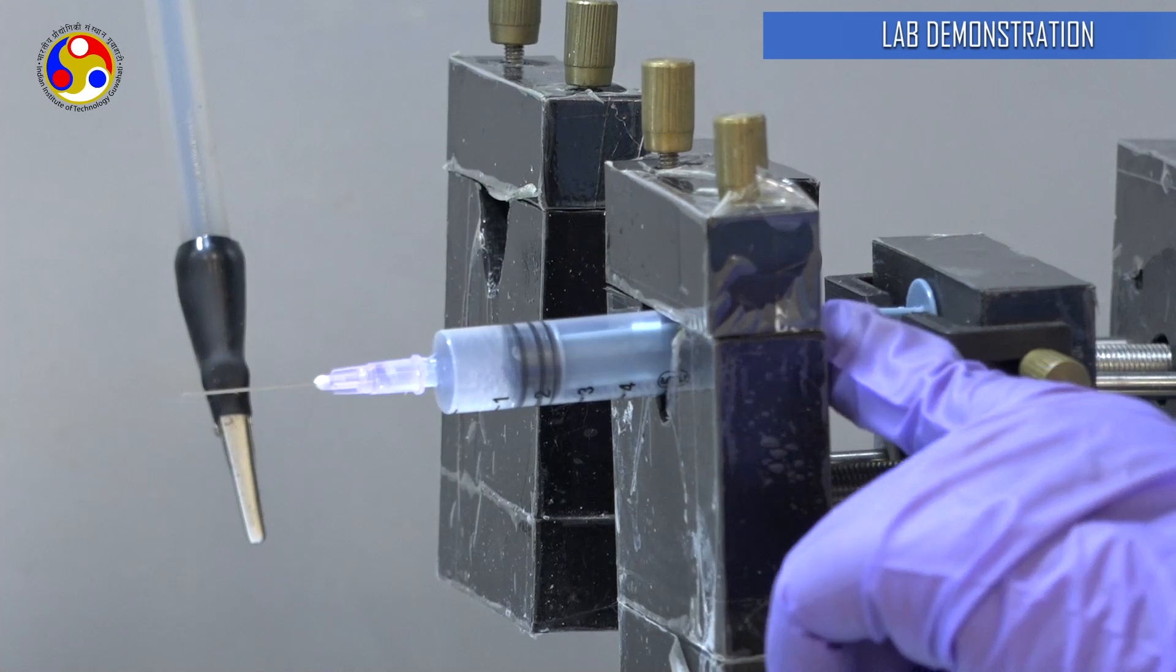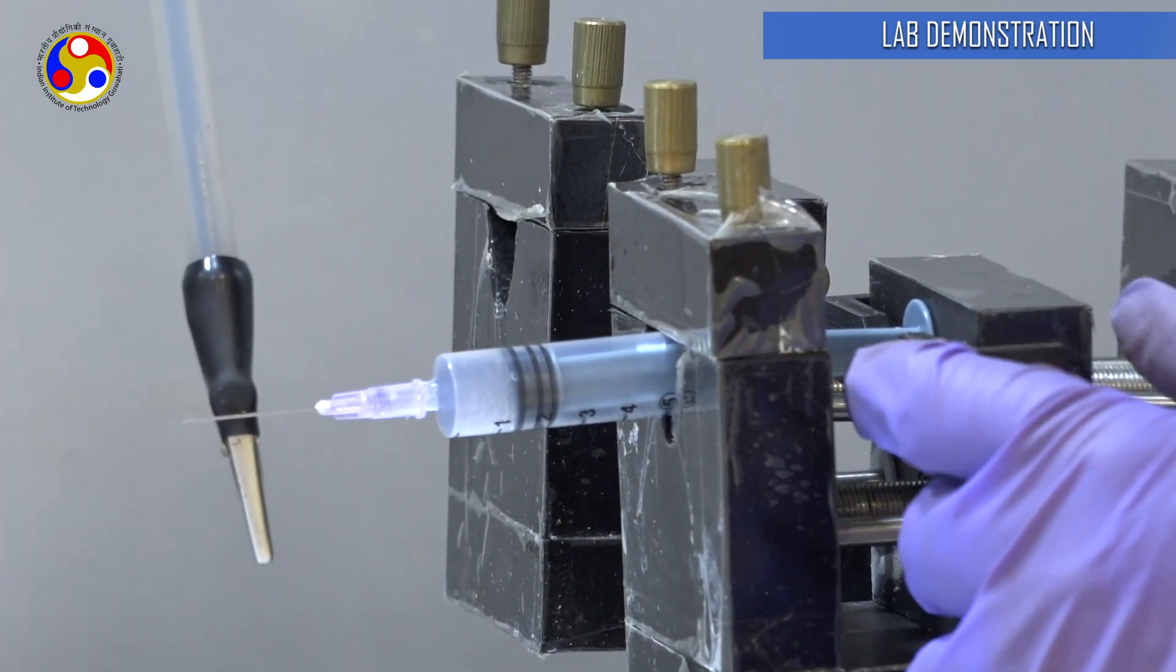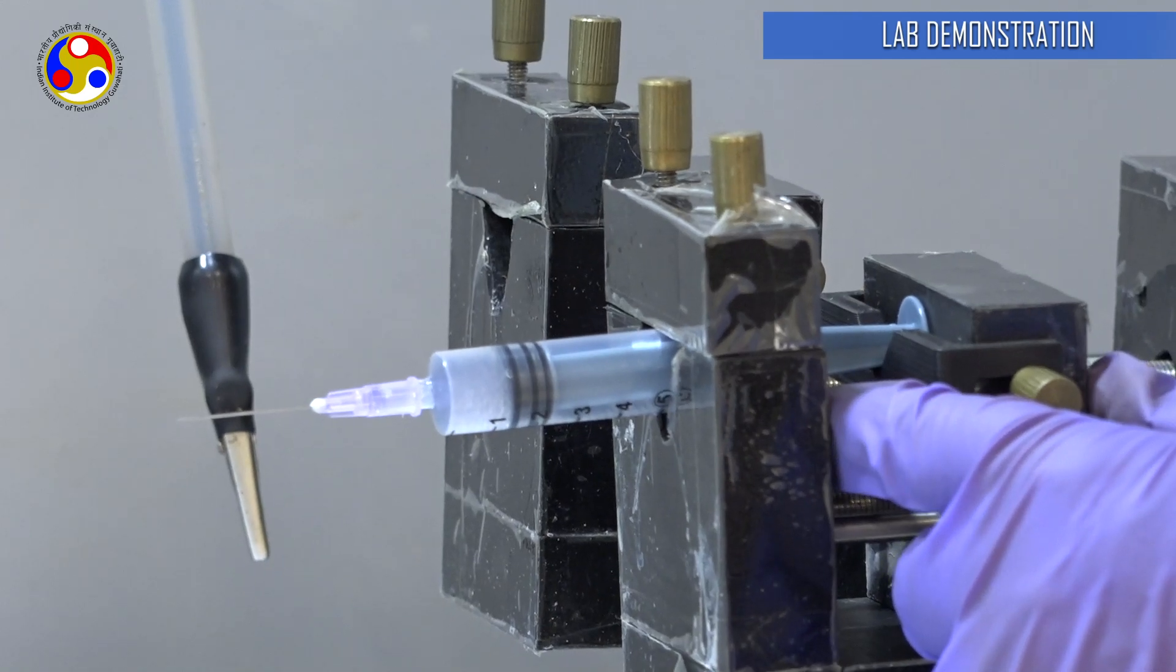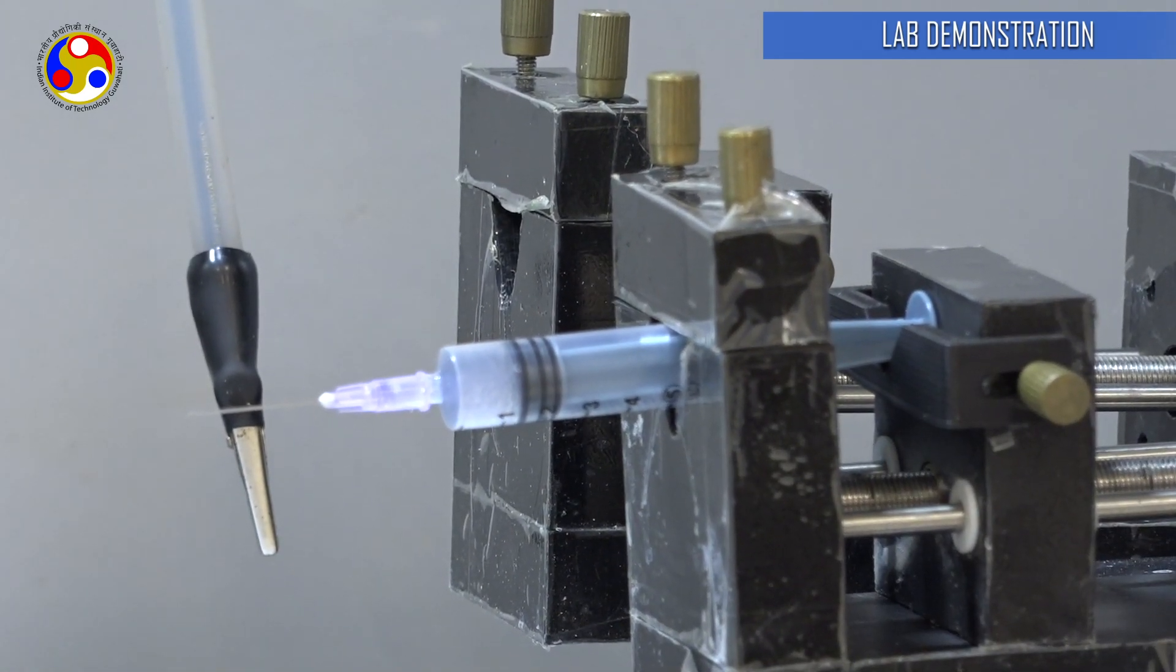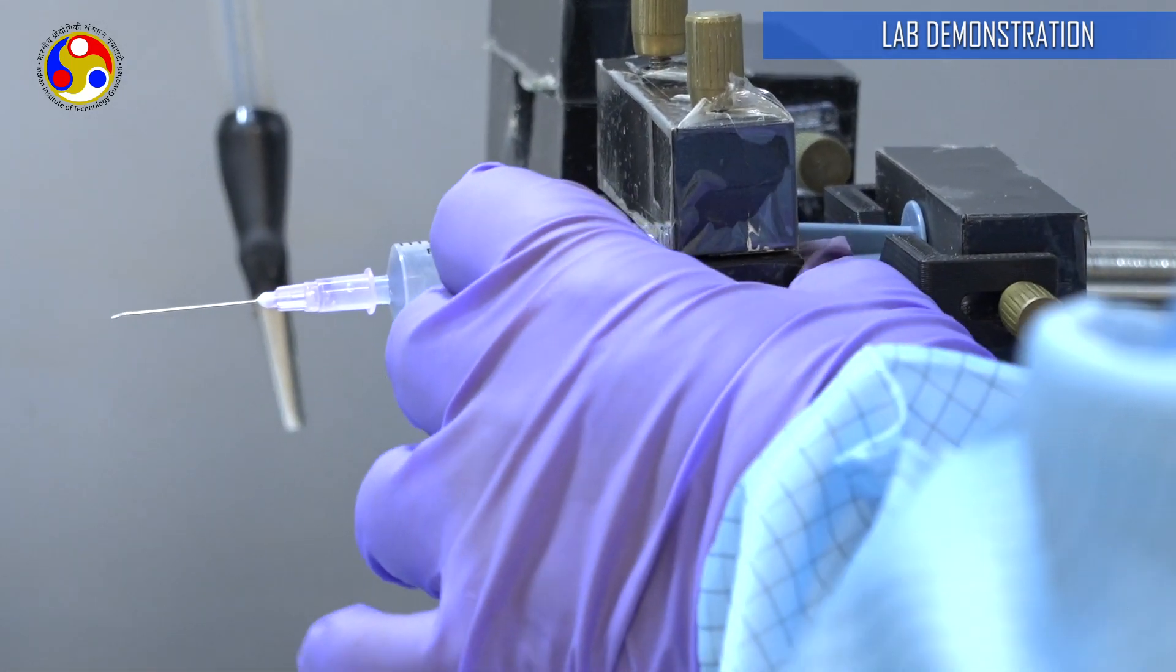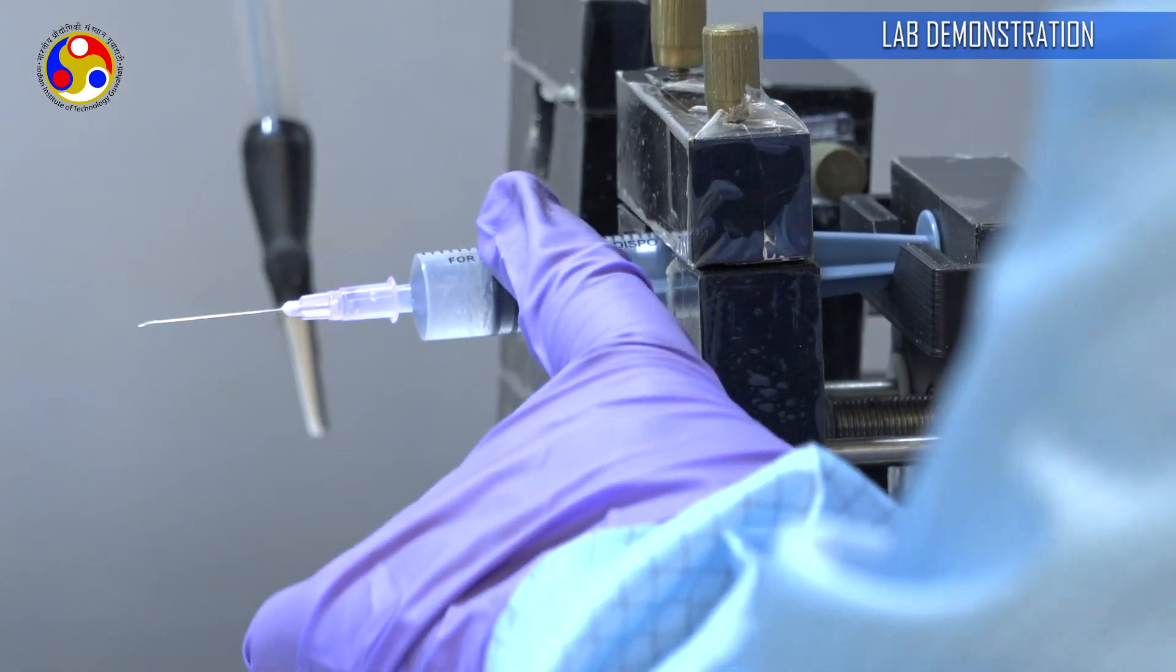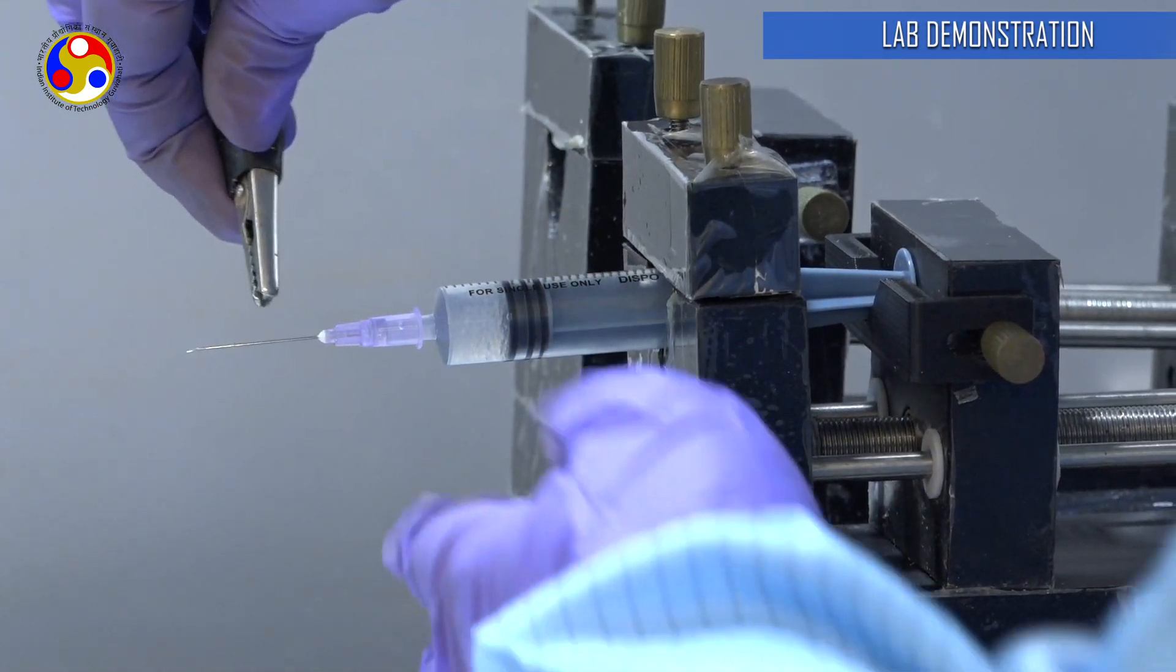Now this part is being affixed to this stoppage right over here, so as the piston keeps moving, it will slowly start to pump the solution out of the syringe. This part is affixed with this piston over here, we can connect this syringe needle with this high voltage power source.